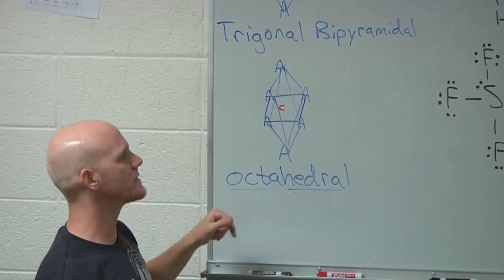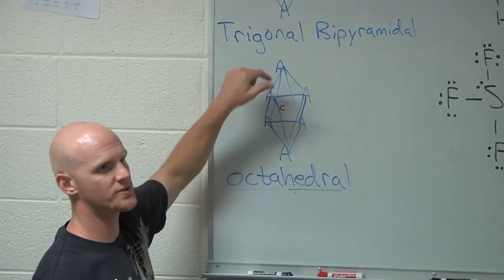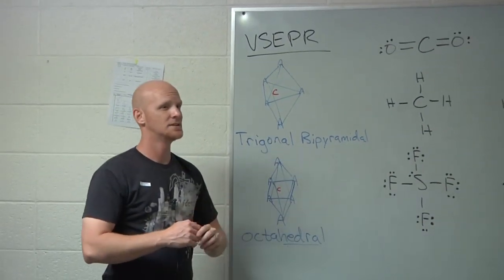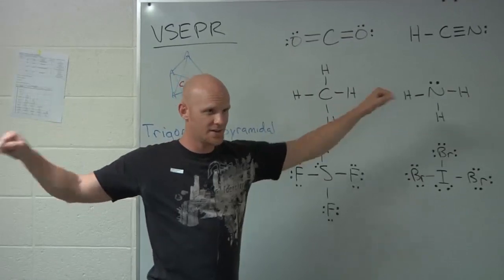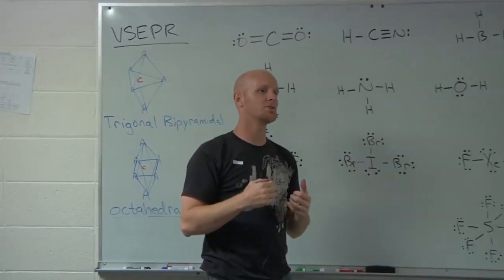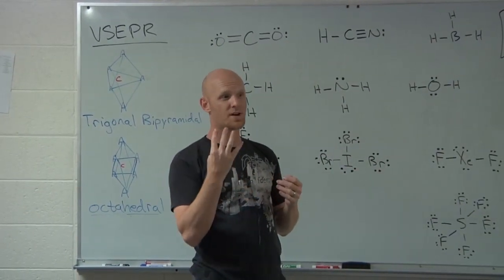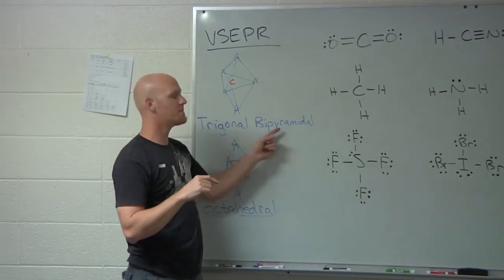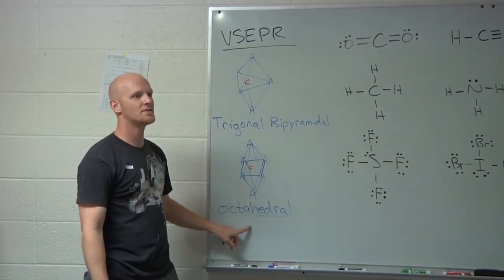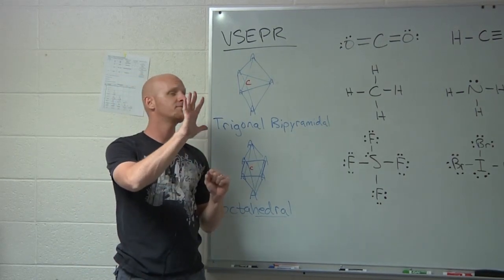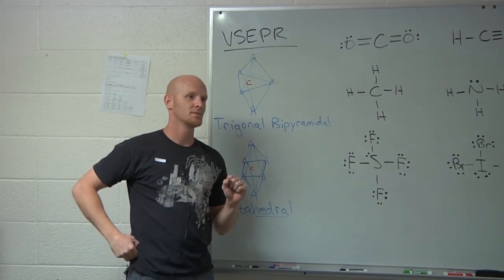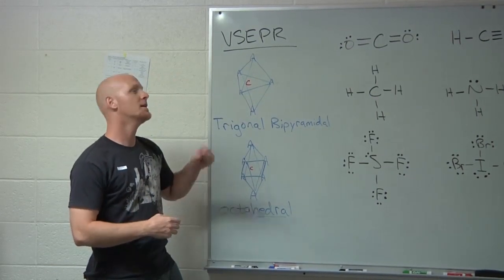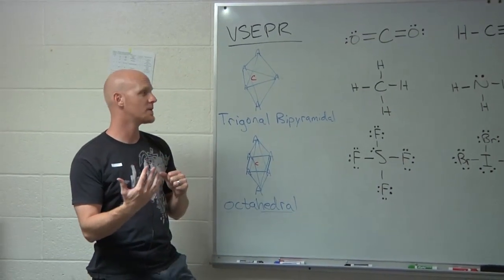So you have five fundamental shapes to know: two electron domains — linear; three — trigonal planar; four — tetrahedral; five — trigonal bipyramidal; six — octahedral. These are your five fundamental shapes, and there are subclasses to learn as well, but these five are where you start.